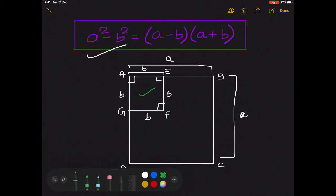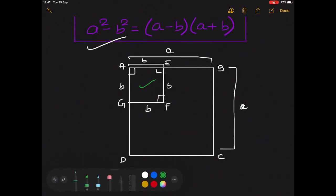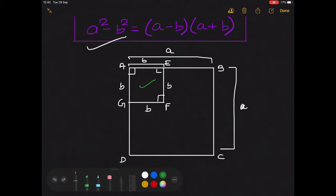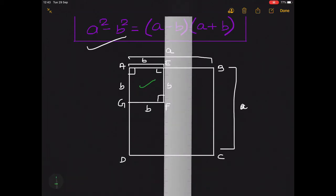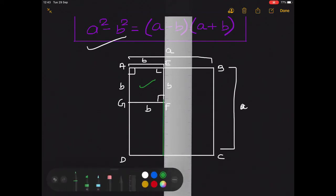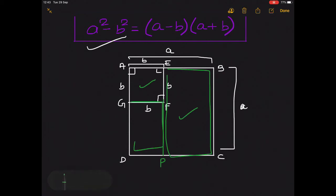Now we will find out this remaining area. To find it, we extend line EF up to line DC. Suppose this new point is P. Now we can easily find out the area of rectangle EBCP and rectangle GFPD.